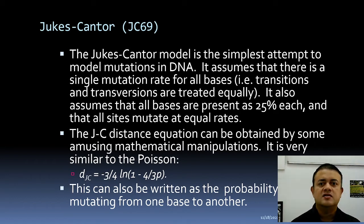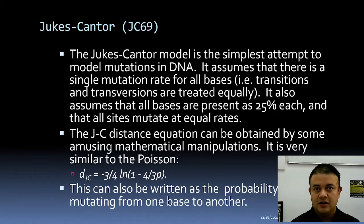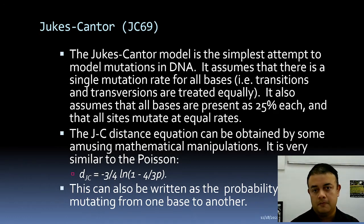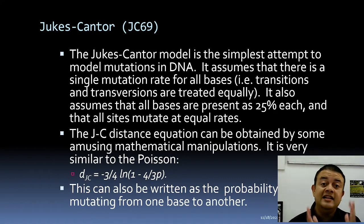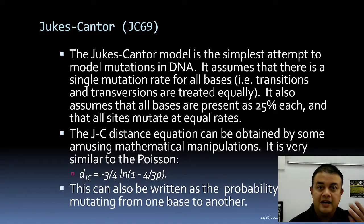One of the simplest models of molecular evolution is called the Jukes-Cantor JC69 model. The name JC69 comes from the Jukes and Cantor 1969 paper. It is the simplest attempt to model mutations in DNA, also considering back mutations and multiple substitutions at the same site.